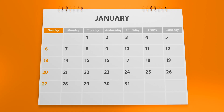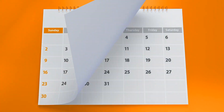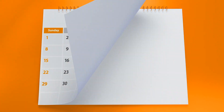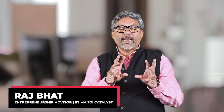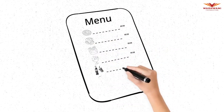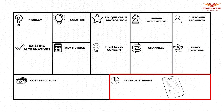Or are you going to give it to the customer in equated installments so that it becomes easier for them to buy? These are various ways by which you can put across what the revenue model is that you're getting into.